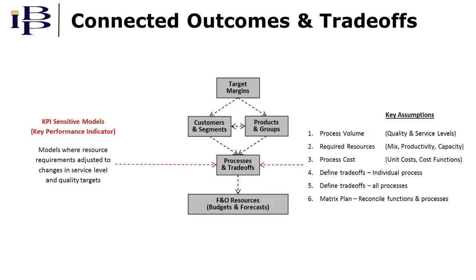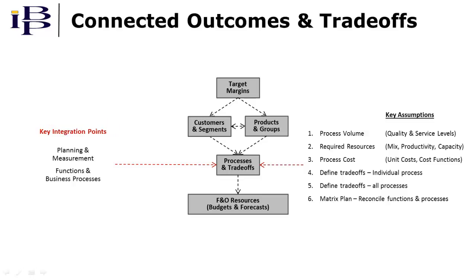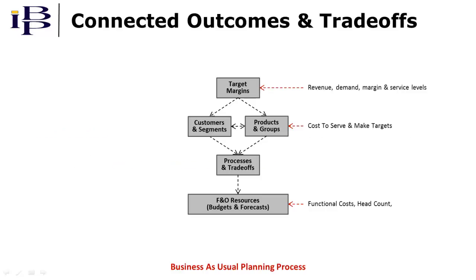To this point, we've summarized how capabilities addressed in other videos support this approach. The new idea here is KPI-sensitive models — ones where planning models can be adjusted for changes in key performance indicator targets. For example, an increase in quality and service level targets in order-taking might increase the time per order. The ability to integrate planning and measurement in this way is central to this planning approach, as is the ability to integrate functional and business process planning. In summary, this part of the approach describes target setting and translation for the business-as-usual part of the planning process.